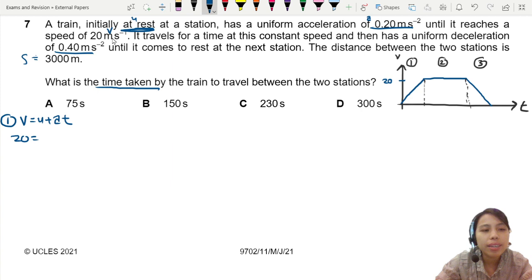Final speed 20, initial speed 0, acceleration 0.2 times T. So this T here is 100 seconds. Yes, we found this. So 100 seconds to get here.